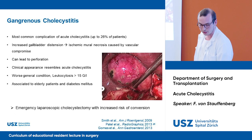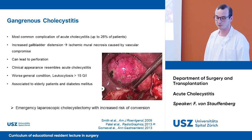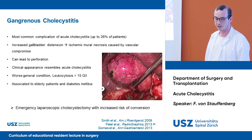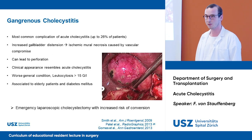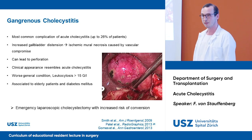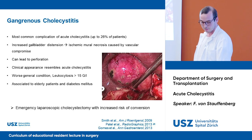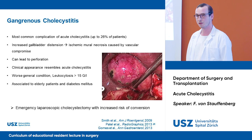The most common complication of acute cholecystitis is gangrenous cholecystitis, occurring in up to 26 percent of patients. Due to increased gallbladder distension, there is ischemic mural necrosis caused by vascular compromise. It can lead to perforation, and the clinical appearance is similar to acute cholecystitis, but patients present in worse general condition with leukocytosis over 15,000. It is associated with elderly patients and diabetes mellitus. Treatment of choice is emergency laparoscopic cholecystectomy with increased risk of conversion.